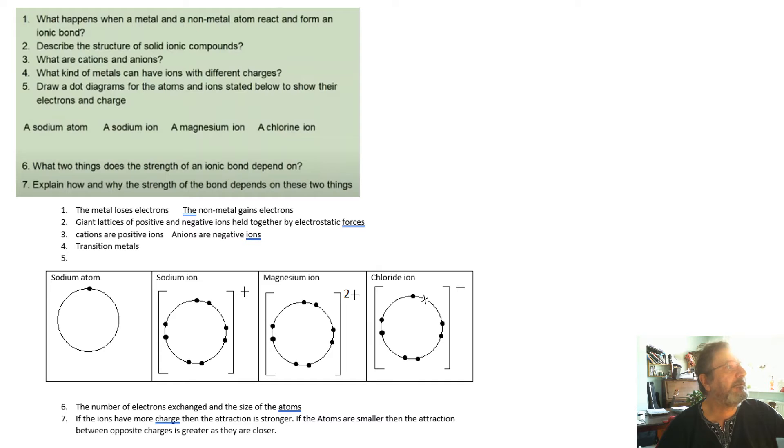What kinds of metals can have ions with different charges is transition metals. For example, Fe2+, Fe3+, they can have different amounts of charge. The dot diagrams for the atoms and ions, there they are there. You only need to draw the outer shell. And if it's charged, then that's how you show that it's charged with that bracket there.